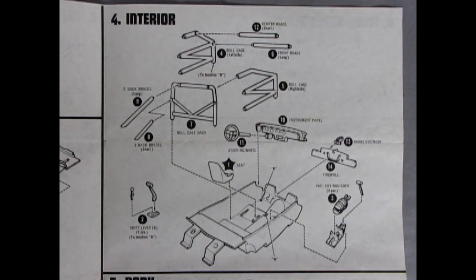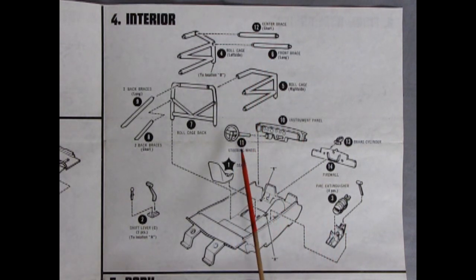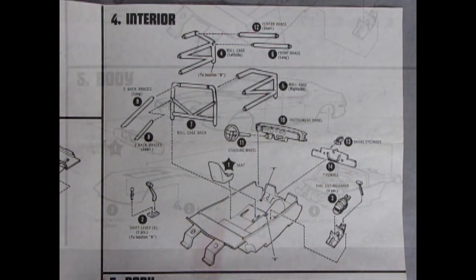For the next stage of our assembly, we have our interior going together. Make sure you follow these steps properly or you're going to find yourself in some trouble. First off, you need to put the seat into the floor pan, followed by the shift lever and the fire extinguisher. Then after that, you can assemble your roll cage, put that in next. Then your dashboard because your dashboard is slotted to go onto these parts of the braces. And then your steering wheel and everything else will all go into place according to the numbers.